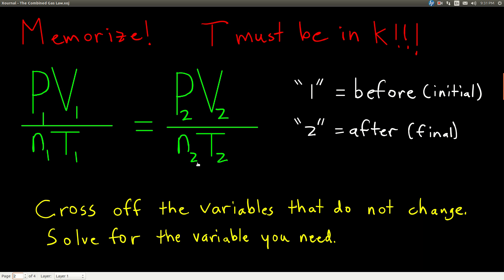The symbols mean the same thing that they do in the ideal gas law. P is pressure, V is volume, N is number of moles, and T is temperature.